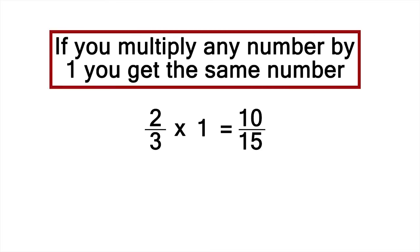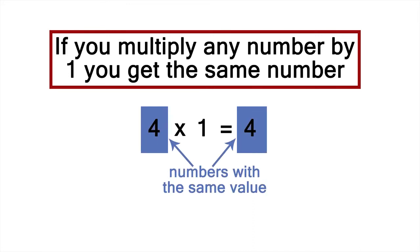But we know that if you multiply any number by one, you get the same number. For example, four times one equals four. We get a number with exactly the same value. By the same reasoning, two-thirds has the same value as ten-fifteenths.